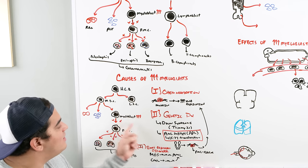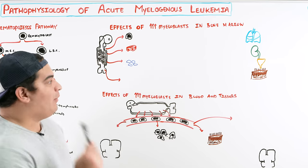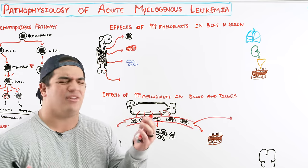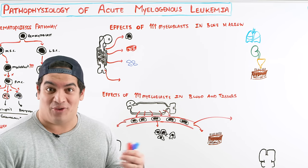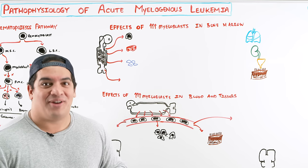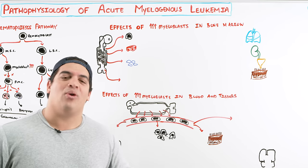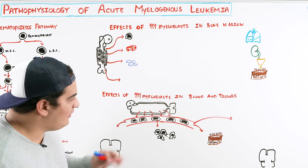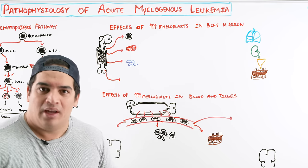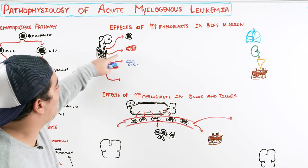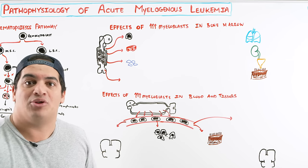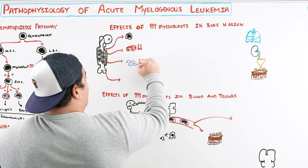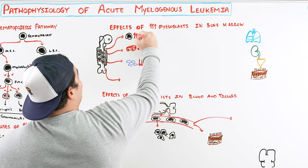Now let's talk about the consequences of having tons of myeloblasts in the bone marrow and blood. These myeloblasts are replicating like crazy, taking up so much space in the bone marrow that they hog nutrients for other cell lines and don't allow replication of other lines to occur. So red blood cells start decreasing in number, and platelets start decreasing in number — you just have tons and tons of myeloblasts.